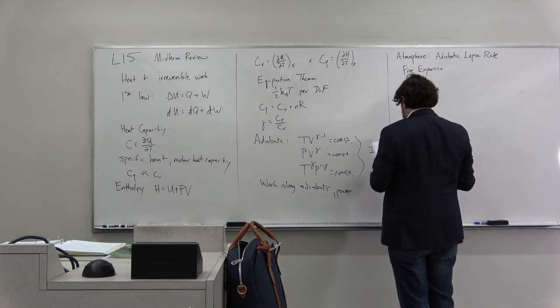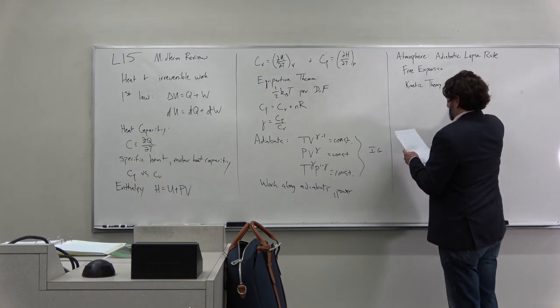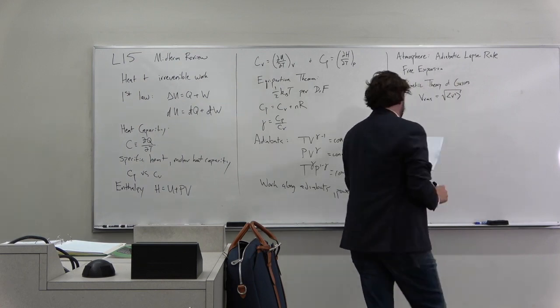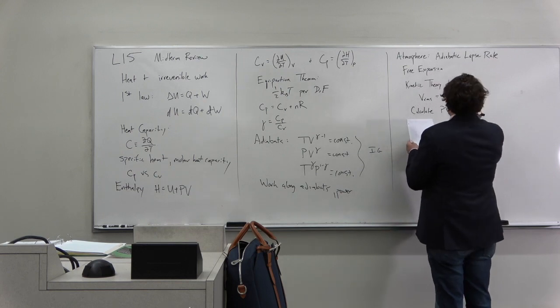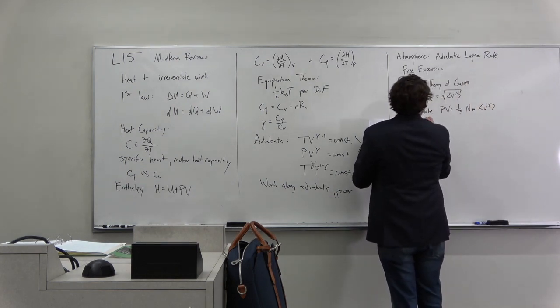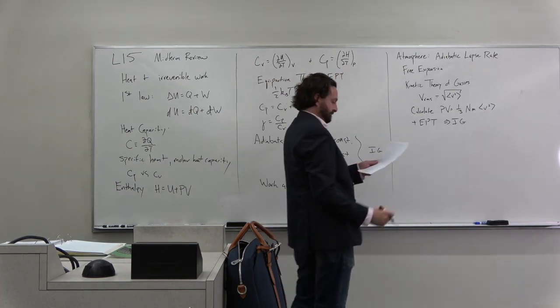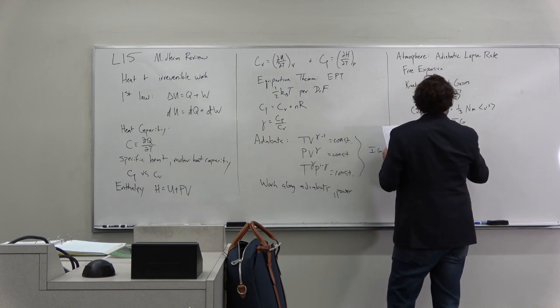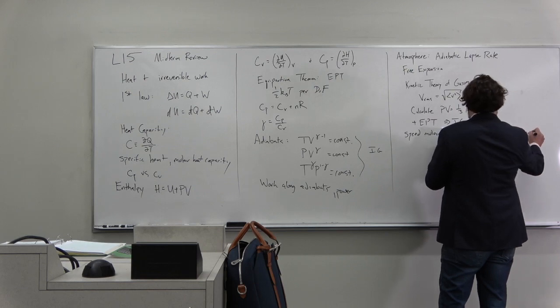We did kinetic theory of gases, and we had vrms equal to the square root of v squared averaged. It allowed us to calculate basically our ideal gas law: PV equals one-third nm v squared. So that, plus the equipartition theorem, led to the ideal gas law. We did an example of the speed of a molecule in the room and how much energy is in the internal energy in the room.